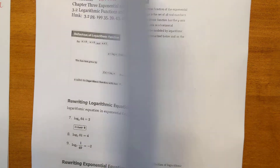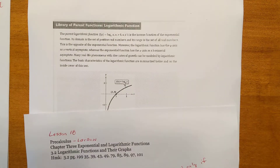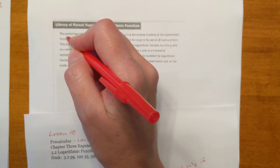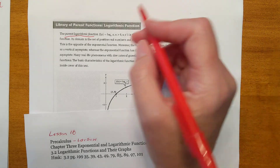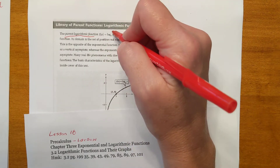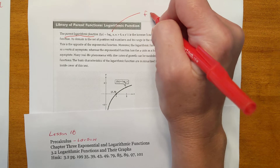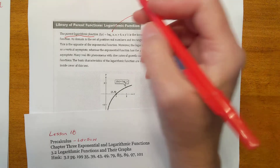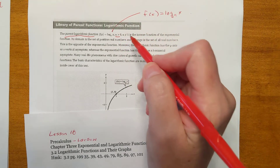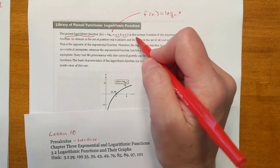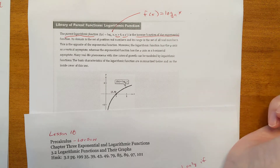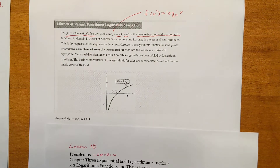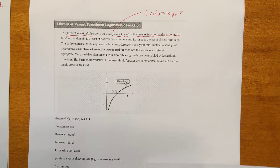Looking at the next page, we're going to look at the parent function for logs: f of x equals log base a of x. It's for a greater than 0 and a not equal to 1 — it's the inverse of the exponential function. I'm going to skip to the back of the packet first, because it'll help you out a lot.